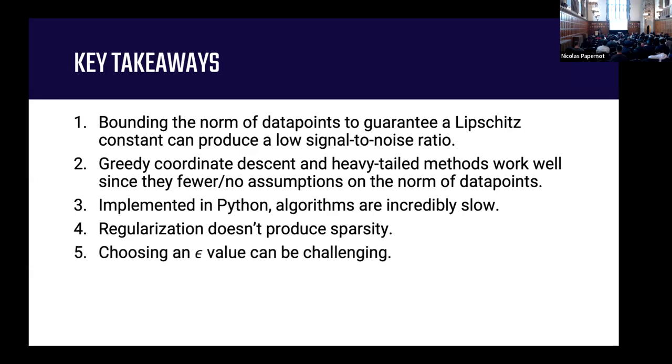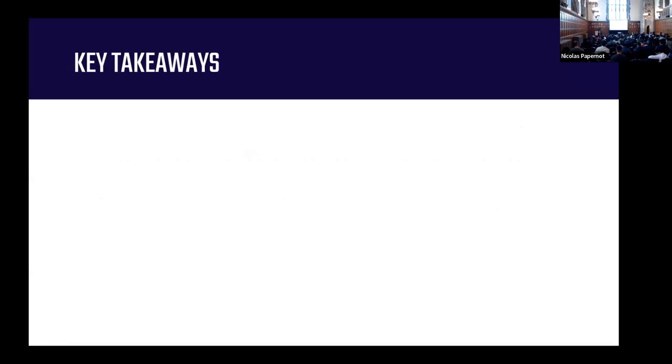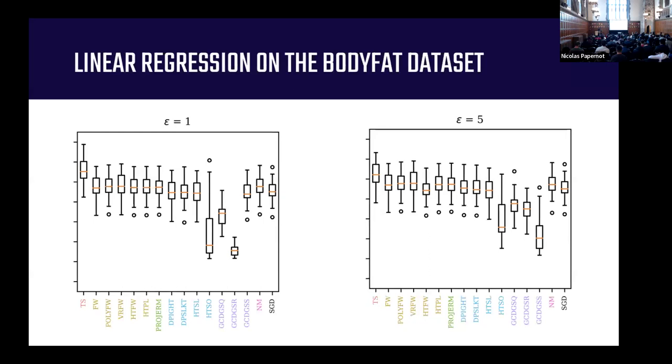And then finally, just like everything in differential privacy, choosing an epsilon value can be challenging. If you go back to the previous slide, you can see that our performance barely changed from epsilon equal to 1 to epsilon equal to 5. Since linear modeling is typically part of a larger pipeline, we want to find the smallest epsilon value at which we achieve that sort of maximal performance that we're going to get, so that we can save our privacy budget for the next steps.